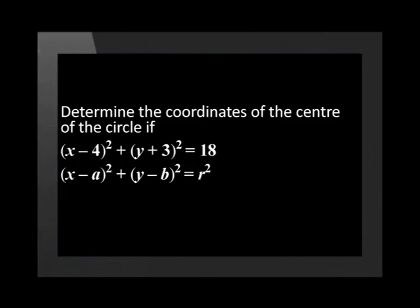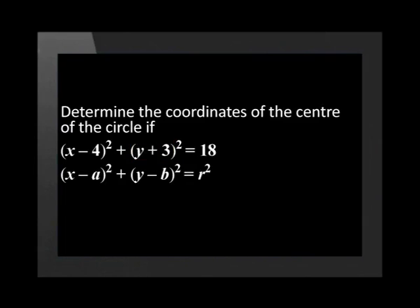If we analyze this we see that 4 is in place of a and 3 is in place of b. But did you notice that the bracket says y plus 3? This means that the value of b is actually negative 3. Therefore the center of the circle is (4, negative 3).